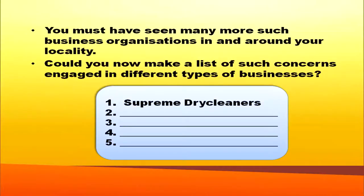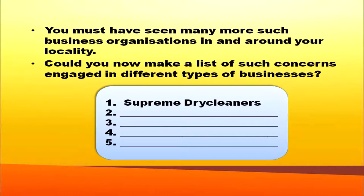You must have seen many such business organizations in and around your locality. Please make a list of such concerns engaged in different types of businesses. For example, supreme dry cleaners near my house is owned by one person. You can also find out such organizations to study more about this type of organization.